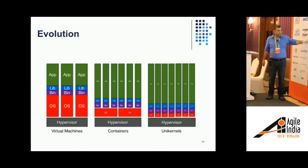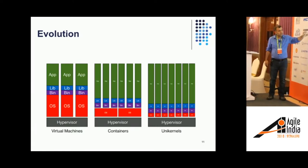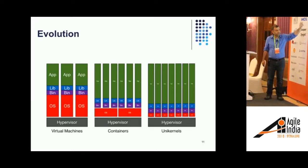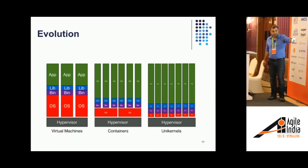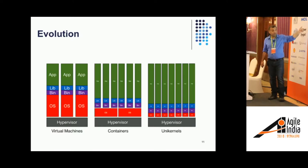Looking at the evolution: you have the hypervisor, then big large components of the OS, then your application. As the space moves, the app component increases and the OS component shrinks. What you have in unikernels is nothing but the next step of evolution beyond containers. The general trend is to focus more on the stuff you actually need and less on overhead you may not even use.